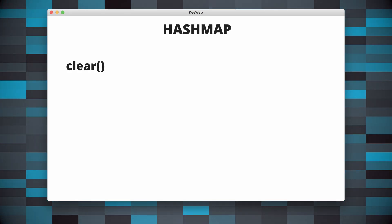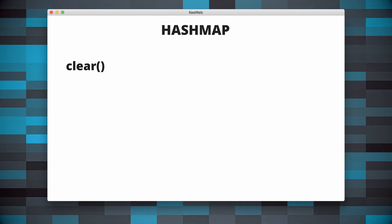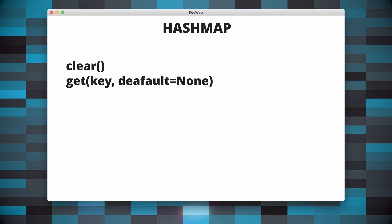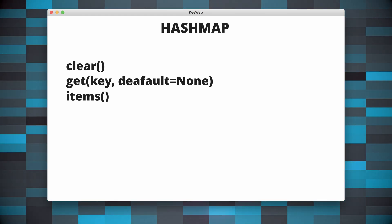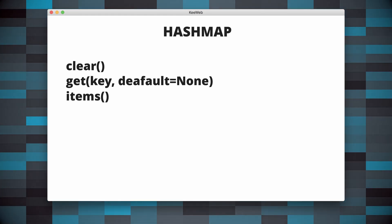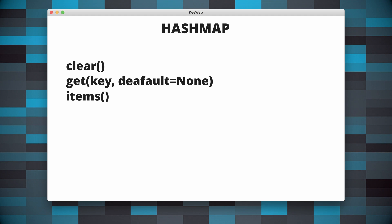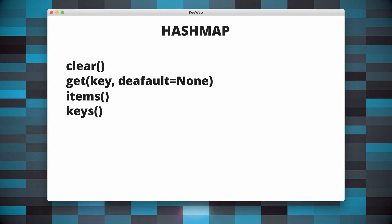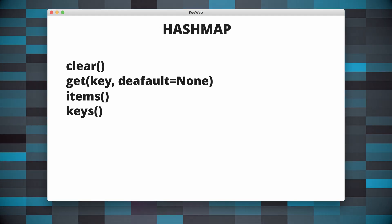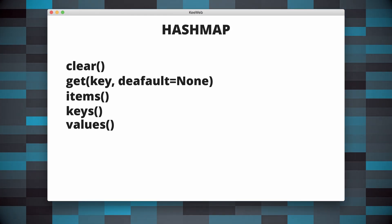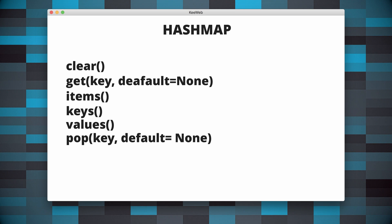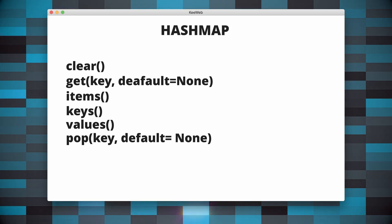The most useful methods provided by Python dictionaries are the following: clear, which clears all the key-value pairs from the dictionary; get, given a key it returns its value; items, which returns a view of the dictionary's key-value pairs; and finally pop, which removes the key and returns its value.